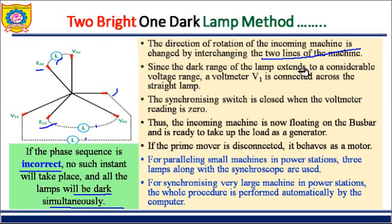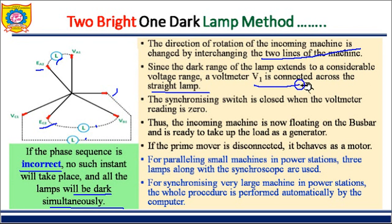Since the dark range of a lamp extends over a considerable voltage range, a voltmeter V1 is connected across the straight-connected lamp — only across the A1 phase — unlike the three bright lamp method where the voltmeter was connected across all three lamps. The synchronization switch is closed when the voltmeter reads zero, indicating the machine is synchronized.